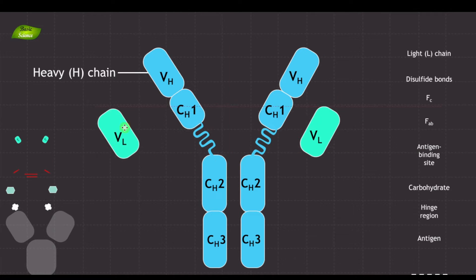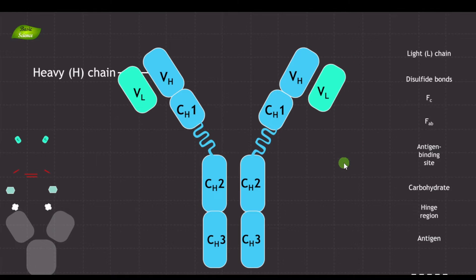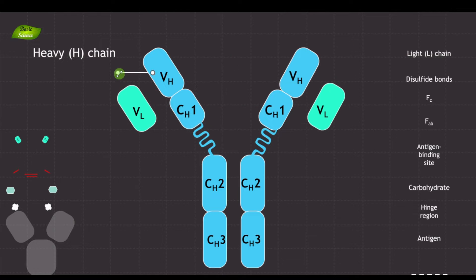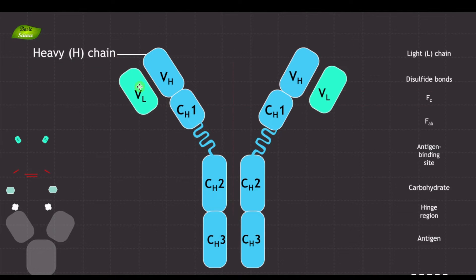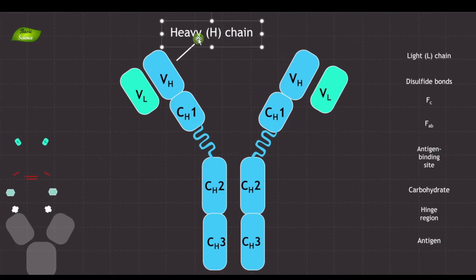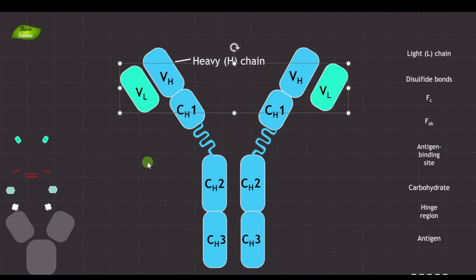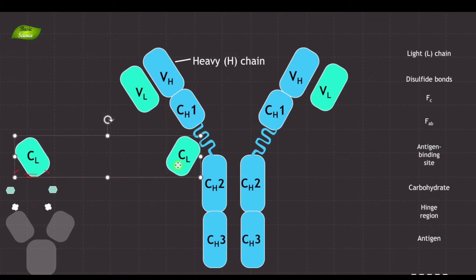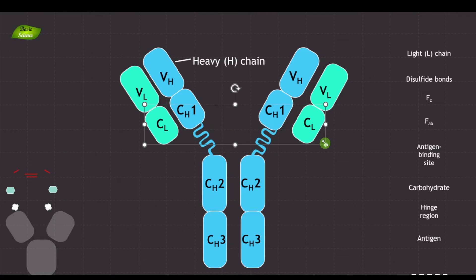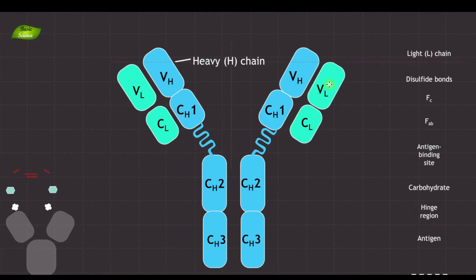Now let's move on to the light chains. In the same way we had variable and constant heavy chains, we'll also have variable light chains shown in green. The light chain has a variable region and also a second region which is the constant region. These are now aligned — so these are the light chains.